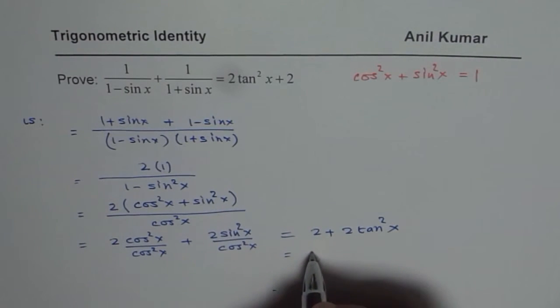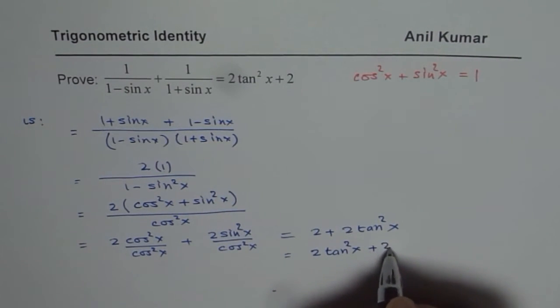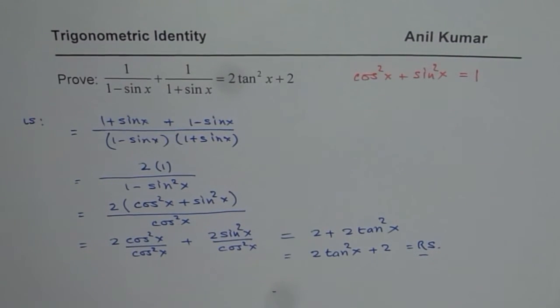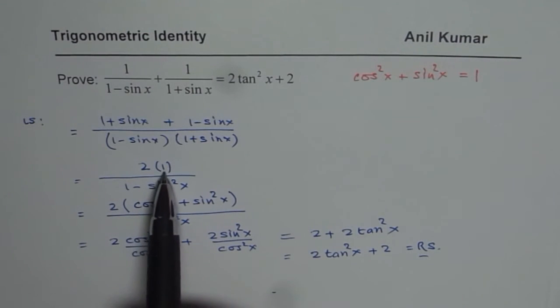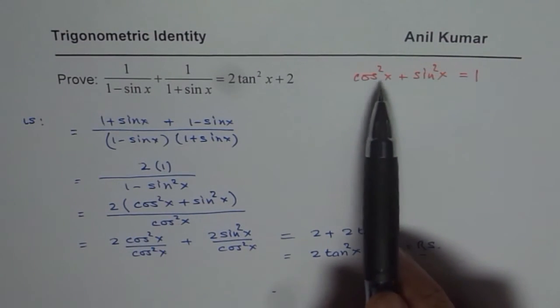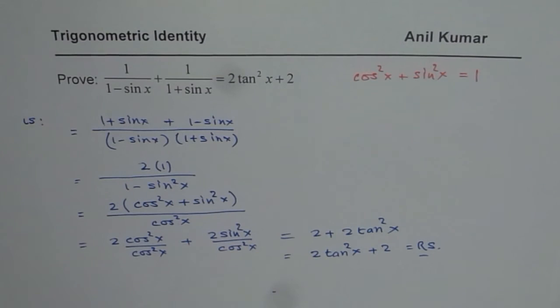So it could be written as 2 tan square x plus 2, which is the right side. That is how you can actually prove this identity. The critical part here is to understand that 1 could be written as cos square x plus sin square x. I hope that helps. Thank you.